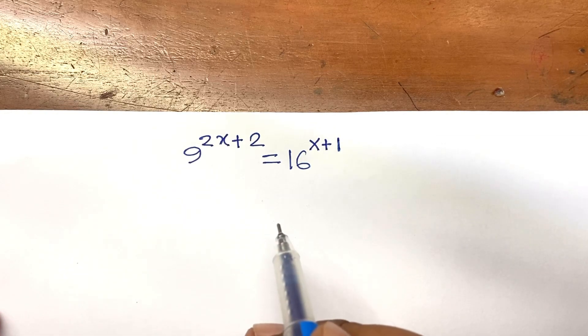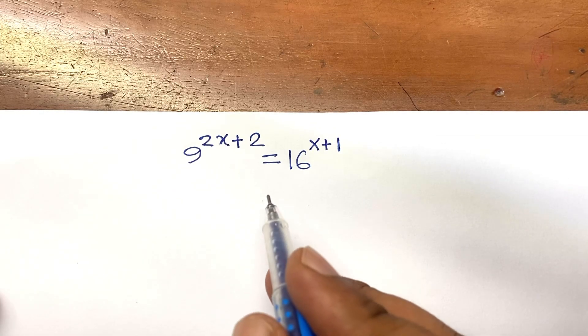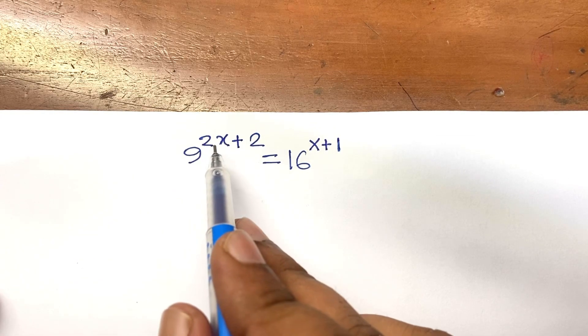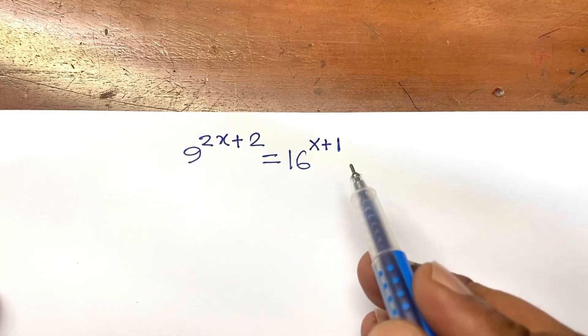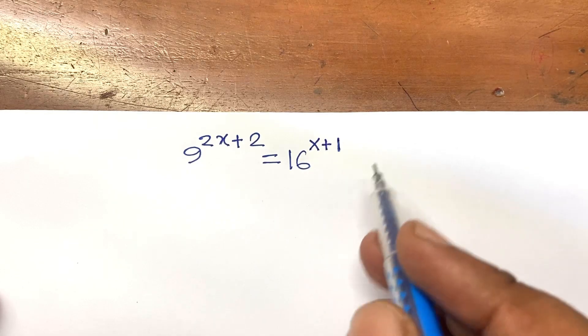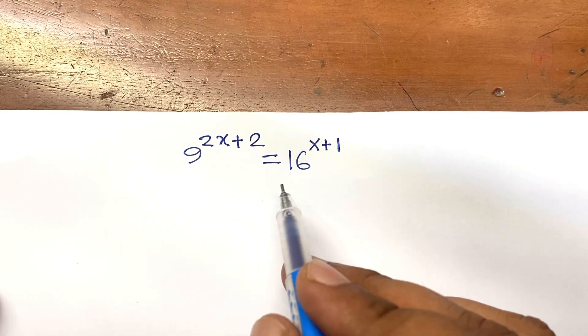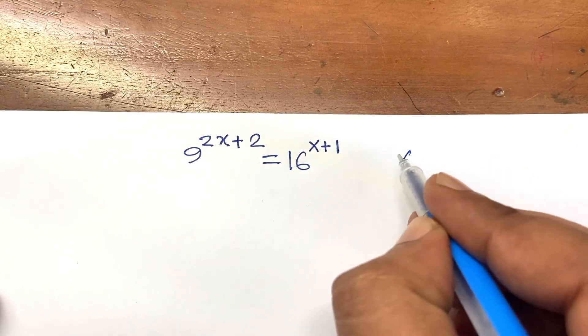Hello everyone. How to solve this exponential equation? This equation is 9 to the power of 2x plus 2 is equal to 16 to the power of x plus 1. We will find out what is the value of x.